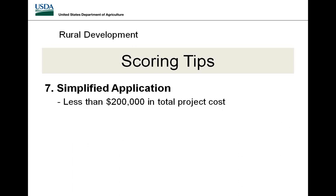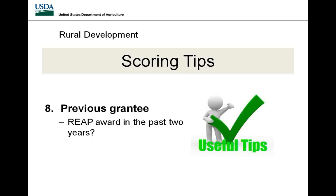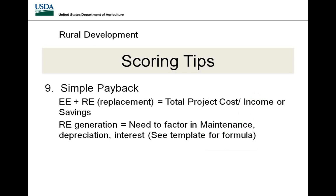Small or very small businesses qualify for priority points if they have less than $1 million in annual sales and fewer than 15 employees. The simplified application, for projects of $200,000 or less in total project costs, gets these points automatically. If you have not received an award in the past two years, you get points. The simple payback criteria looks at total project cost divided by income or savings. Renewable energy generation projects factor in maintenance, depreciation, and interest.